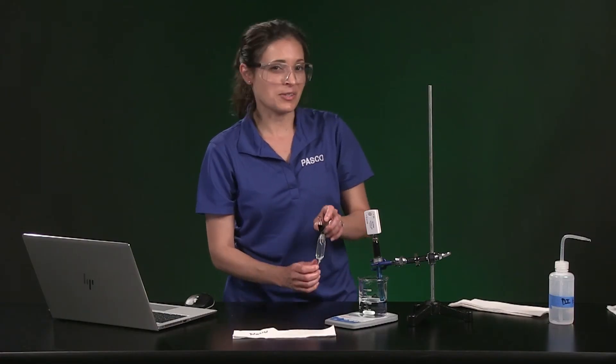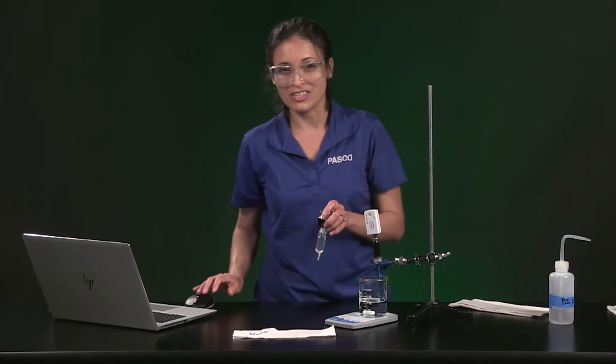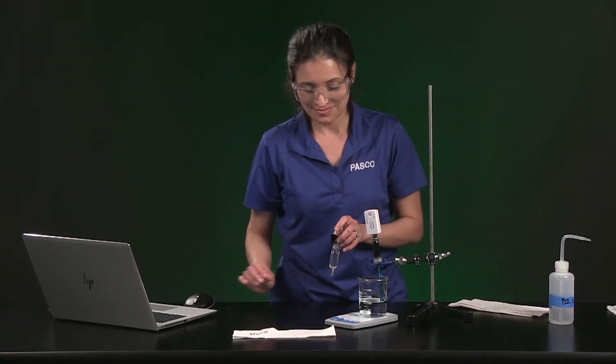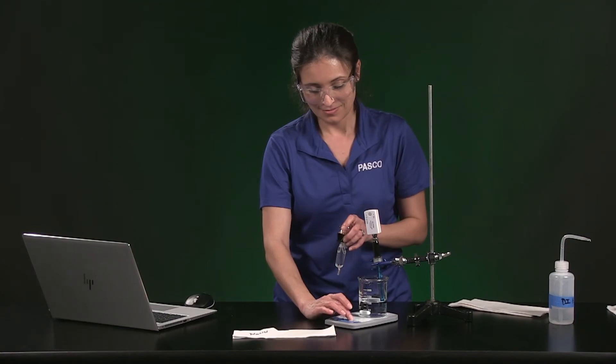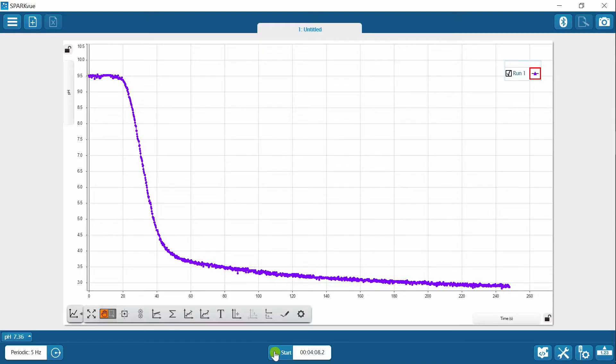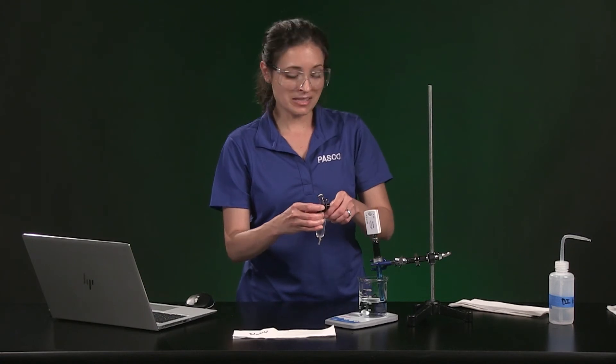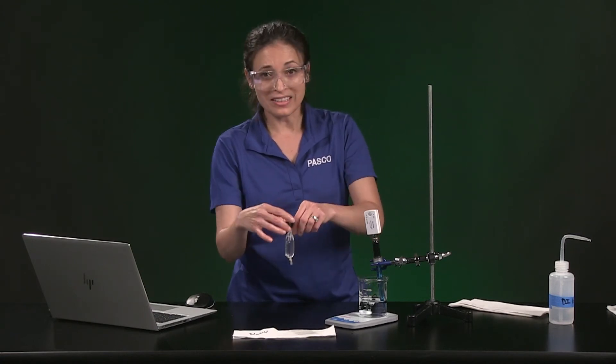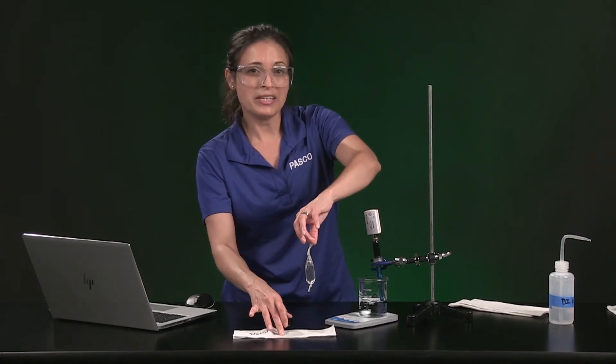I am going to turn on the magnetic stirrer and start collecting data to record the initial pH before adding the bag. Now I am going to set the bag in the beaker and allow data collection to run for another three and a half minutes.